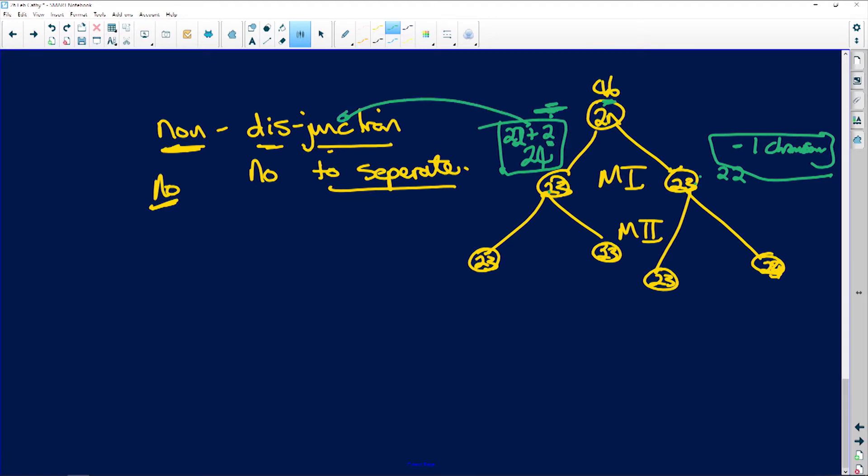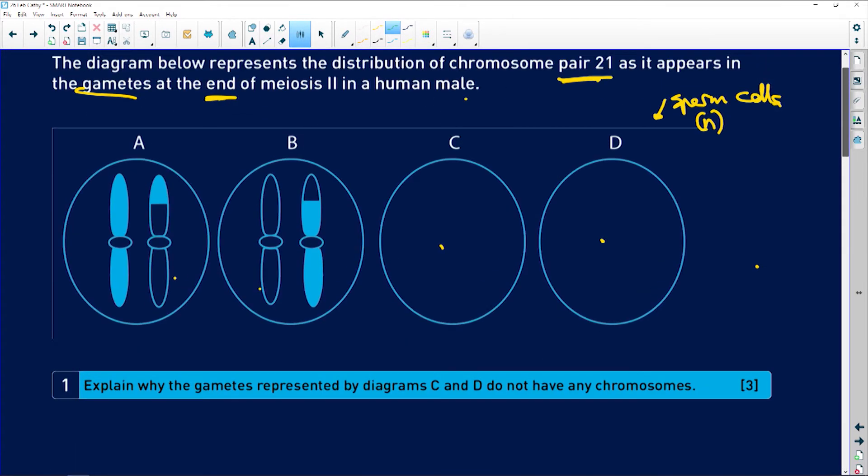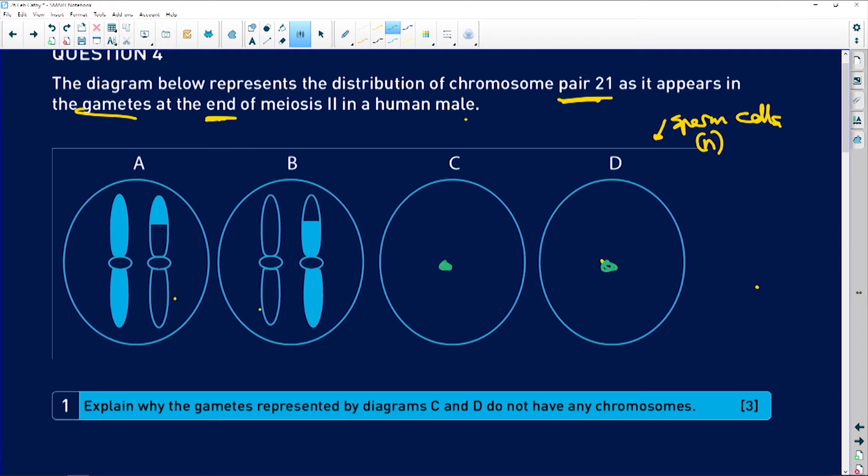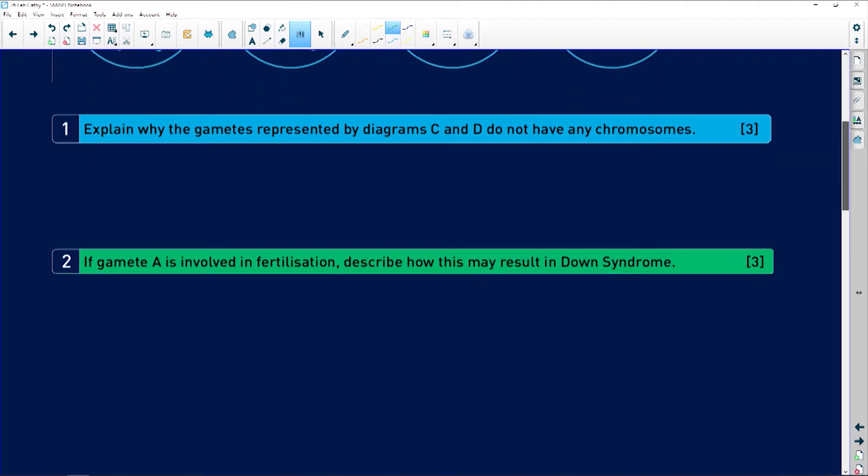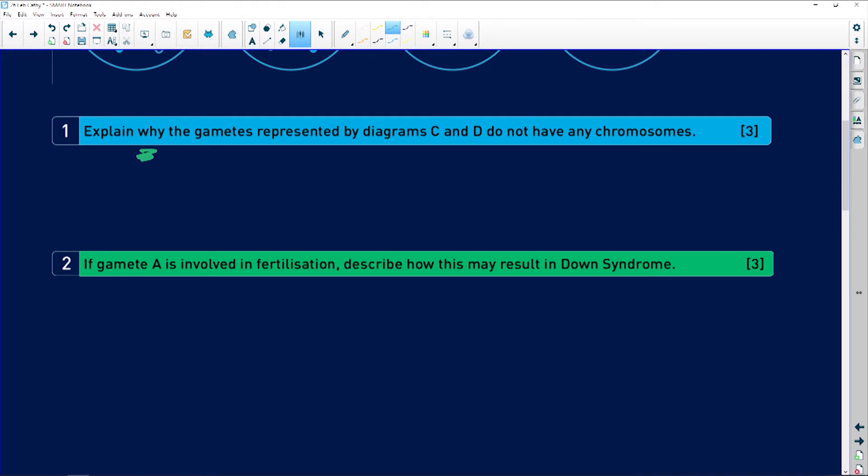Because this one decided they weren't going to divide. So at the end of the day, this little gamete is going to have 24. That one's going to have 24. And this one's only going to have 22 and 22. So what they're showing us here in our diagram is our little empty one there and our little empty one there. This would have been from the other side, the other part of meiosis 2. And here, we have our little chromosomes.